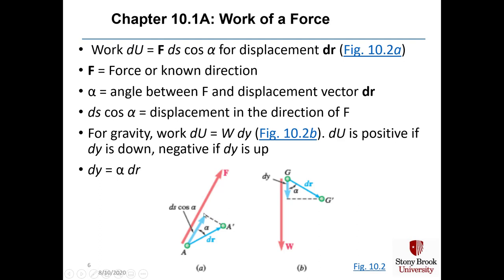For gravity we use figure 10.2b, where work du is equal to W times dy, where y is the vertical direction. du is positive if dy is going down, and du is negative if dy is going up. dy is the small vertical displacement vector equal to alpha dr, so that dy is only in the vertical downward direction.